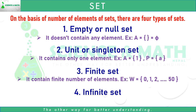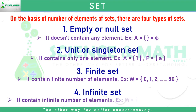Number four: infinite set. Infinite set contains an infinite number of elements. For example, W equals the set of 0, 1, 2, 3, 4, 5, 6, 7 and so on.